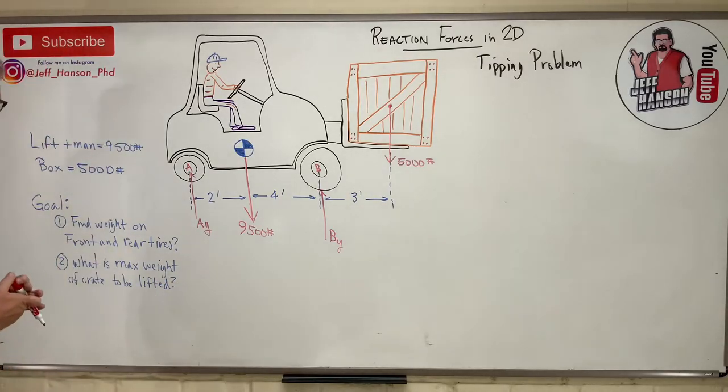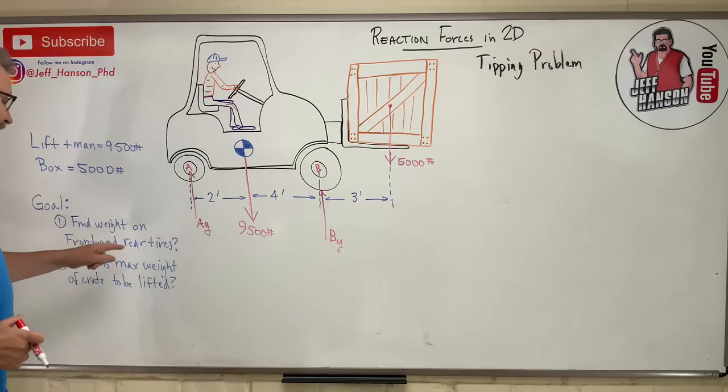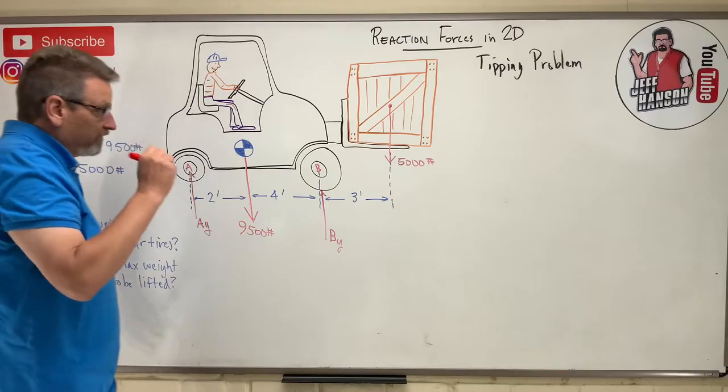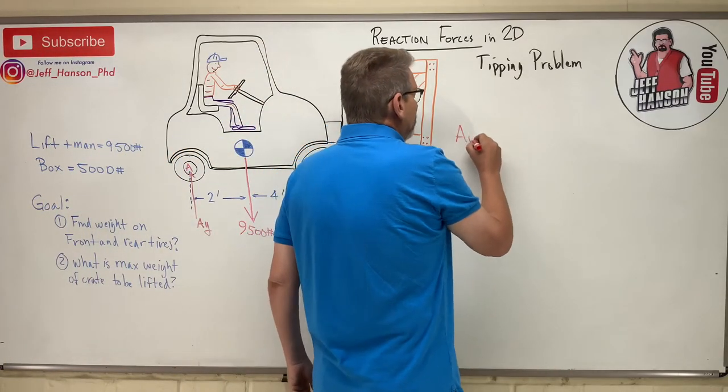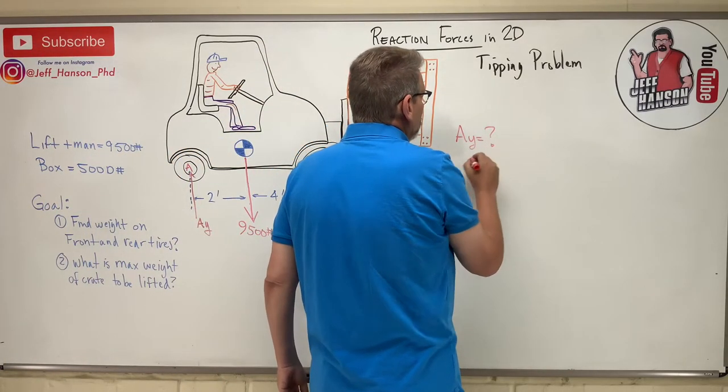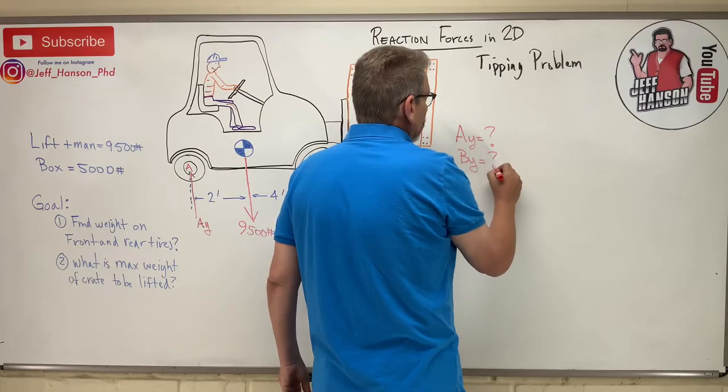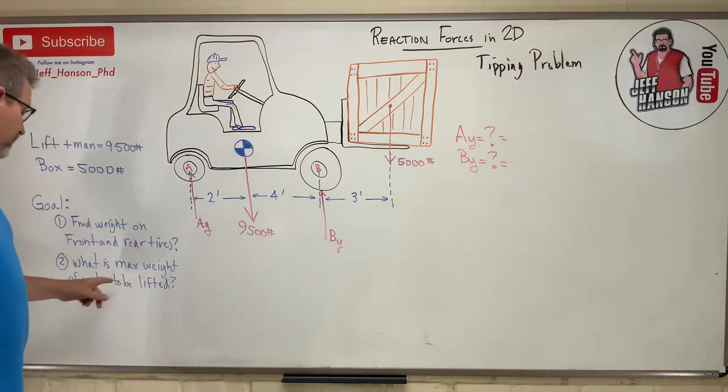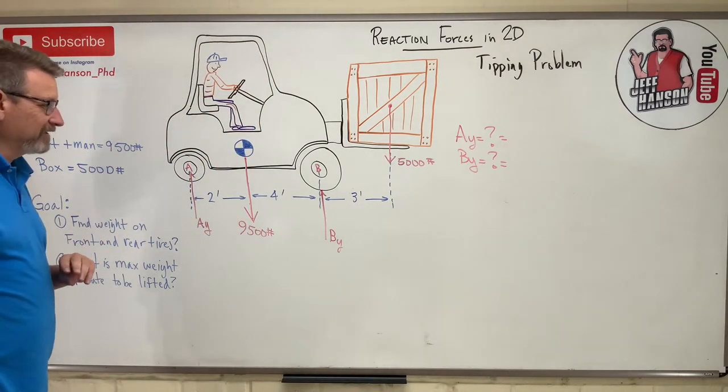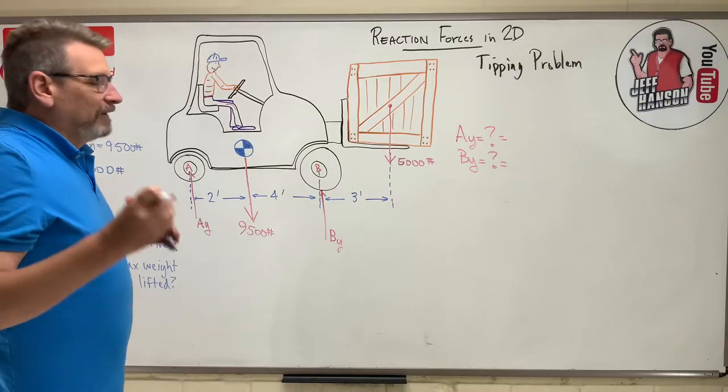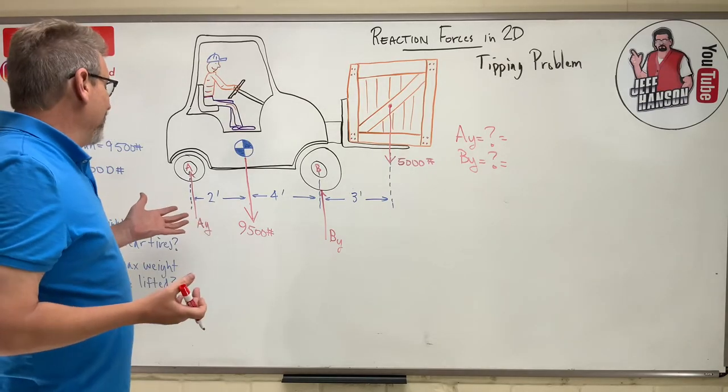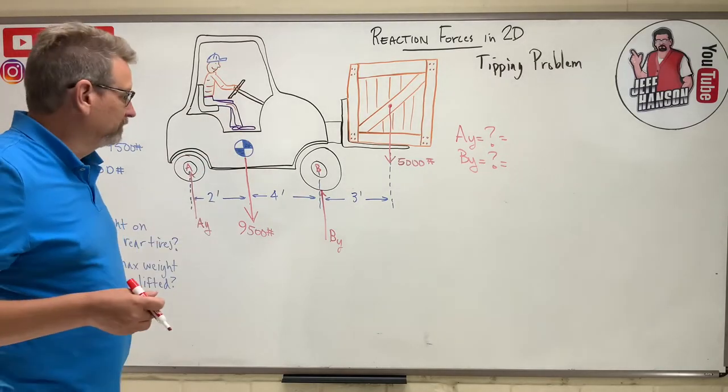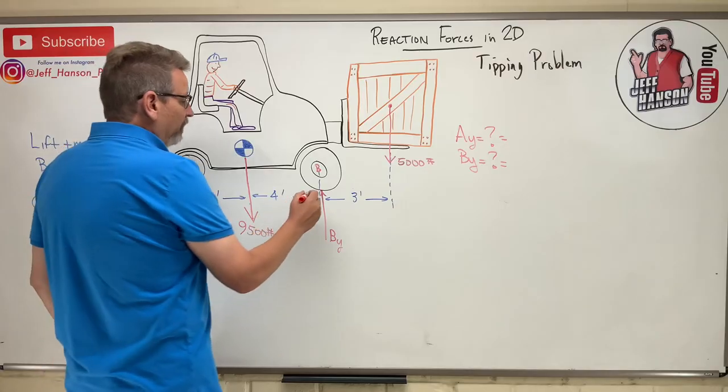Okay, so how can we do this? The problem says find the weight on the front and rear tires. So they want to know what is Ay, what is By? Okay, that's question number one. Ay equals question mark, By equals question mark. What else do you want to know? Number two says what's the max weight? Okay, we'll do that next. So let's start here at this guy. The easiest thing to do, since we only have two unknowns, Ay and By, is take a moment.